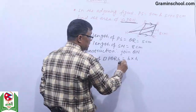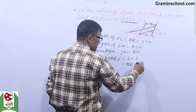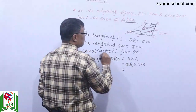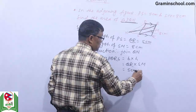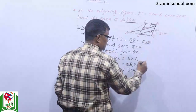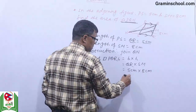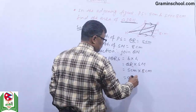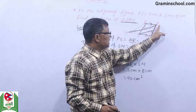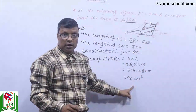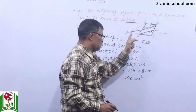Area of parallelogram PQRS equals QR into height SM. QR length is 5 cm, SM length is 8 cm. So 5 times 8 equals 40 square cm. Area of PQRS is 40 square cm.